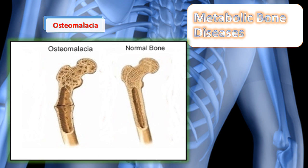Osteomalacia is loss of bone related to vitamin D deficiency, caused by inadequate deposits of calcium and phosphorus in the bone matrix itself. Normal remodeling and calcification of bone is disrupted, and osteomalacia can be caused by liver and pancreatic disorders, chronic kidney disorders, and bone tumors. The major treatment for osteomalacia is vitamin D supplementation.